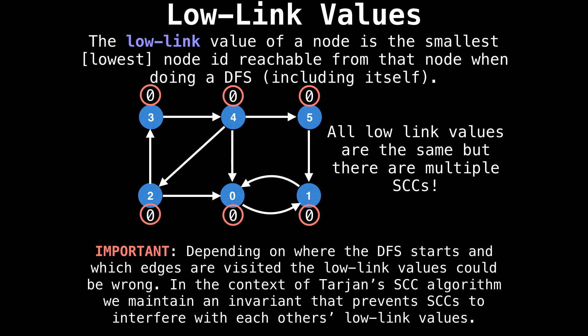So what is going on? What's happening is that the low link values are highly dependent on the order in which the nodes are explored in our depth first search. So we might not end up with the correct arrangement of node IDs for our low link values to tell us which nodes are in which strongly connected component.